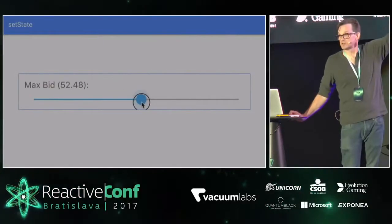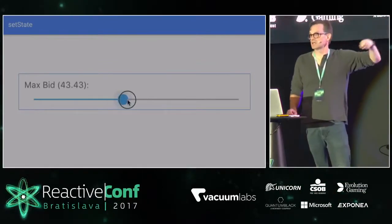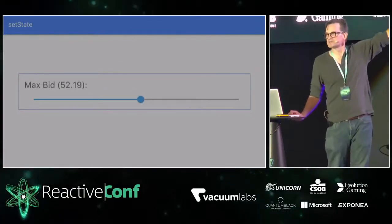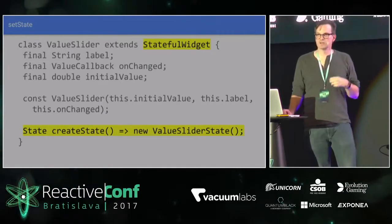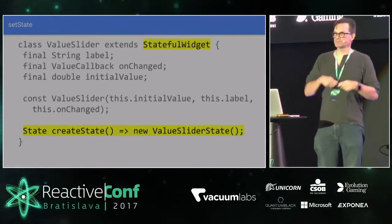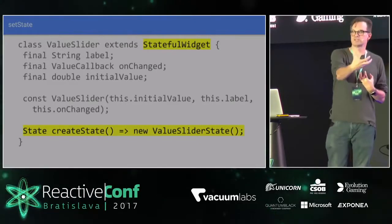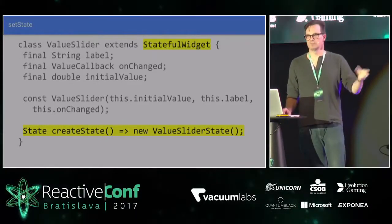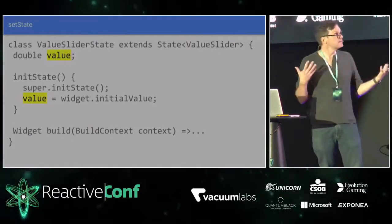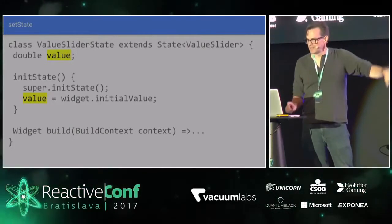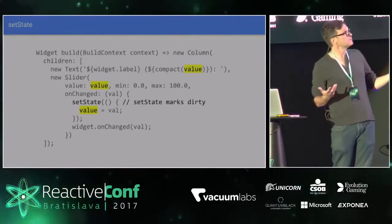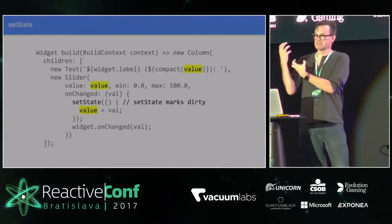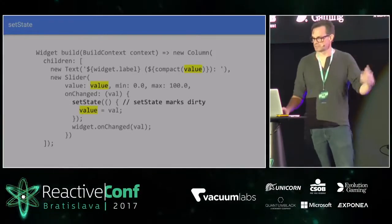The widget is really just responsible for returning a tree of other widgets that will then be composed — similar to a pure functional React component. You can expand the padding by introducing a padding widget around everything else. It gives you a single semantic model for styling as well as rendering your UI. If you do have state, like a material design slider dragging back and forth, that's a stateful widget. A stateful widget doesn't produce the render method directly — it produces a state object that implements the build method. State objects stick around between widget rebuilds.